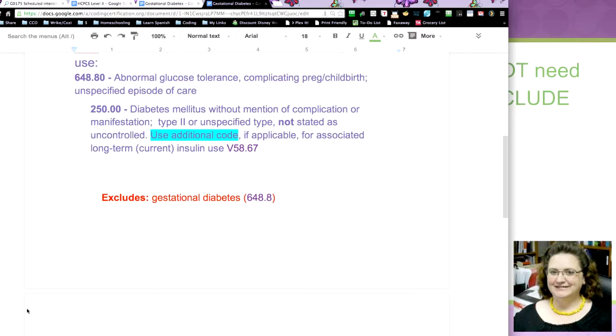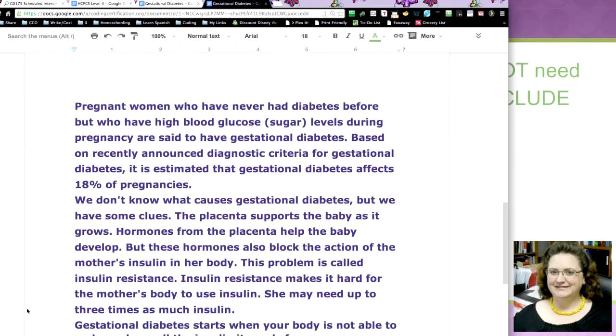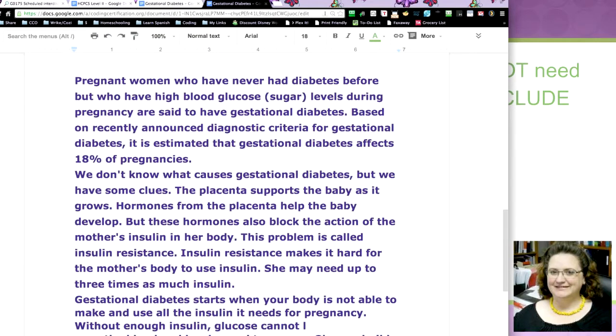Now, that being said, I went ahead and got some more information on gestational diabetes because sometimes if you understand the disease process, it will help you to find the codes and to understand that gestational diabetes is nothing like type 1 or type 2 diabetes. It is a diabetes that is only when you're pregnant. They have high blood sugar during pregnancy and that's it, as soon as the baby is born, it just goes away.